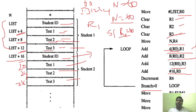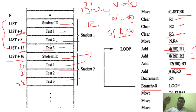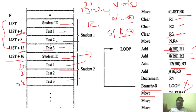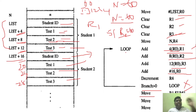The loop repeats for all 60 students. Once the condition is not satisfied, it moves to the next instruction: move R1 to sum1, R2 to sum2, R3 to sum3. Sum1 is the sum of all test 1 marks, sum2 is the sum of all test 2 marks, and sum3 is the sum of all test 3 marks. This is the importance of index addressing.